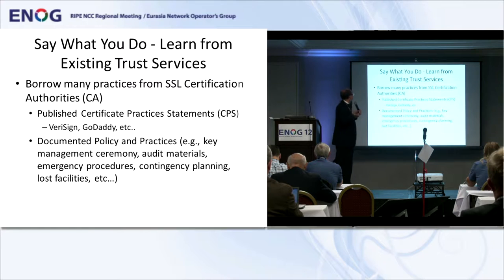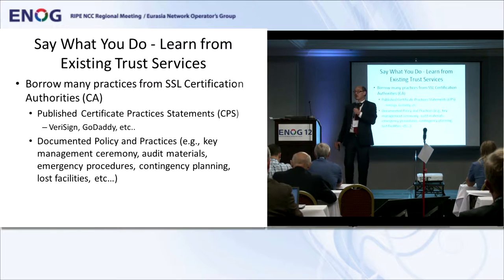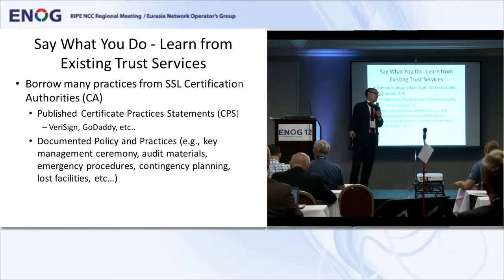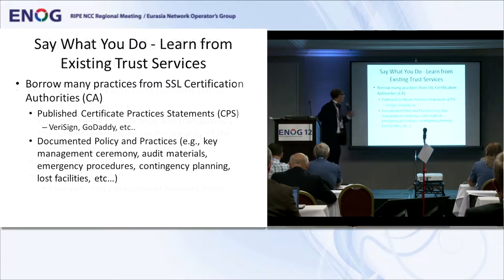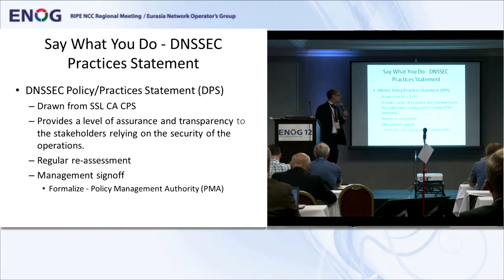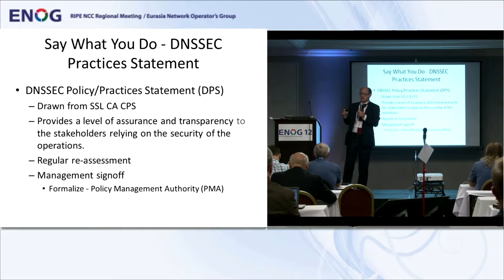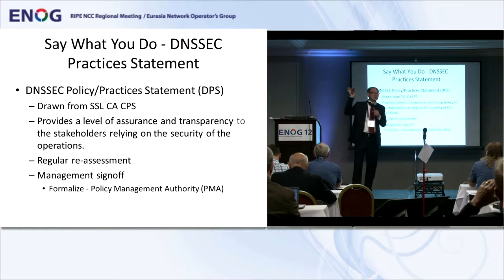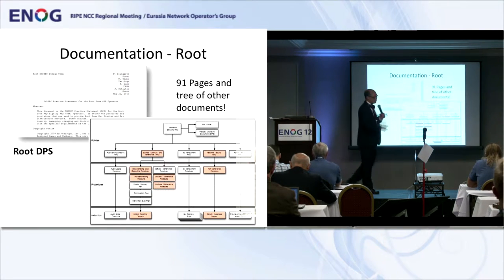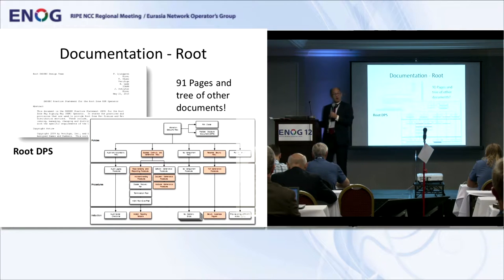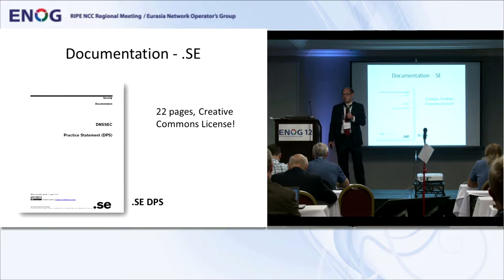What does a certificate authority do? They publish something called a CPS — a big document that says: if there's a fire, here are the fire controls; we need three people every time we do any key management activity; our address is this. Really basic stuff. So what do we do for DNSSEC? We do the same thing — the DPS. It provides a level of insurance. It gets management involved in a small way, which is important.